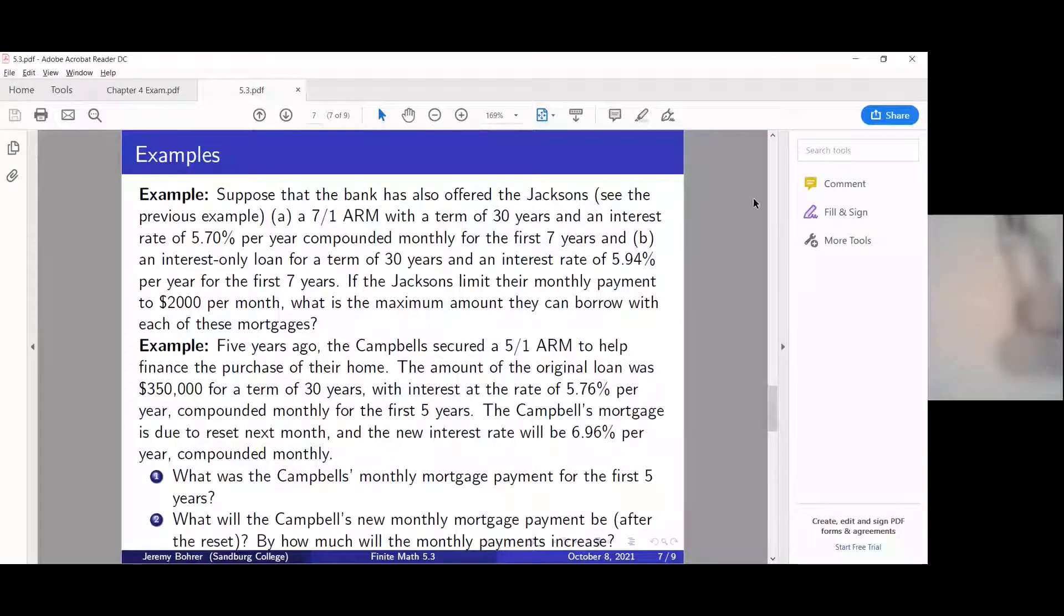Alright, just sharing this for a moment so we can read through our first problem for this video. This video is on problems from the 5.3 slides, page seven. Our first problem: suppose that the bank has also offered the Jacksons a 7-1 ARM with a term of 30 years and an interest rate of 5.7% per year compounded monthly for the first seven years.